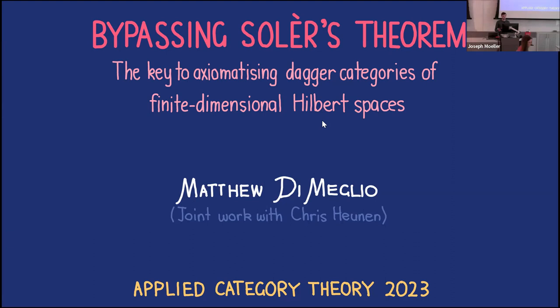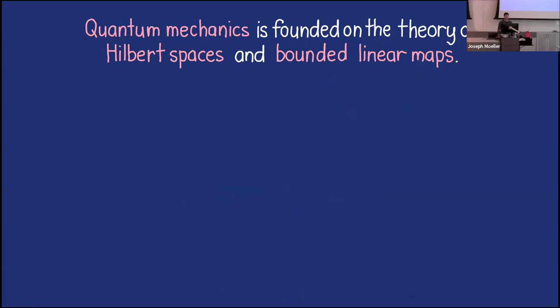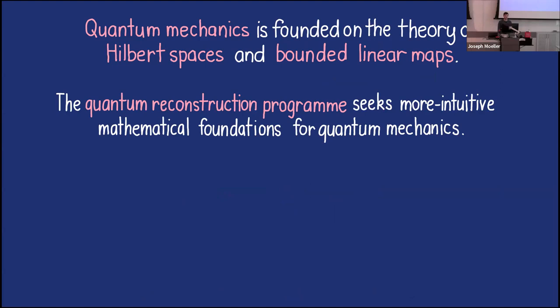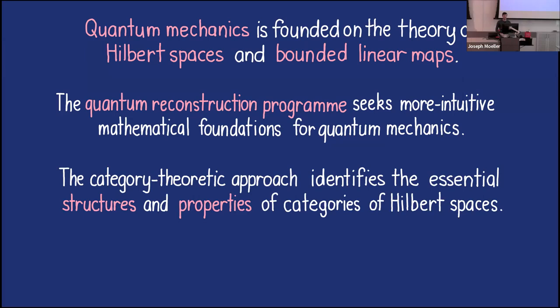What I'm going to talk about is joint work with Chris Honan. It fits into the larger picture of axiomatizing dagger categories of Hilbert spaces. Before I get on to exactly what I'm going to tell you about, maybe I should give you some context for why I'm talking about this at an Applied Category Theory conference. Quantum mechanics is founded on the theory of Hilbert spaces and bounded linear maps.